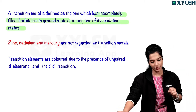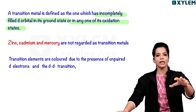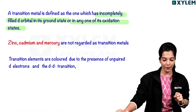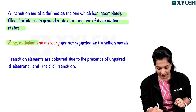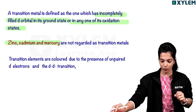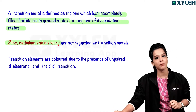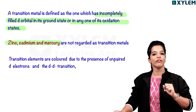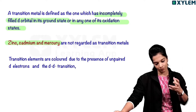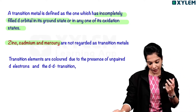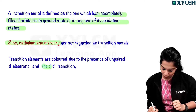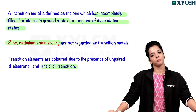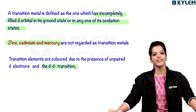D block elements like zinc, cadmium, and mercury are not regarded as transition metals because they have a fully filled D10 configuration. Any colored compounds are exhibited due to the d-d transition.